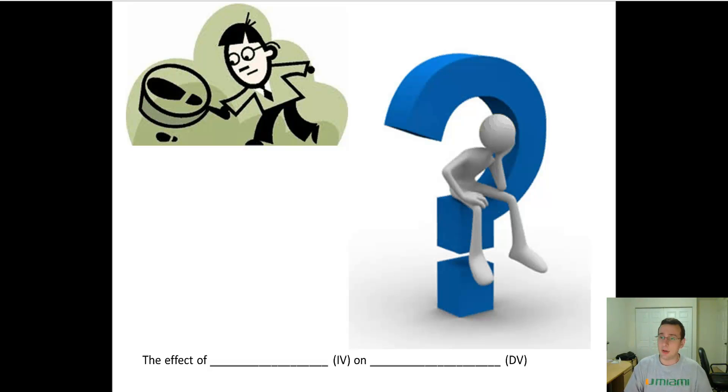So in the example that we talked about, it would be like the effect of nitrogen on the color of the sky.